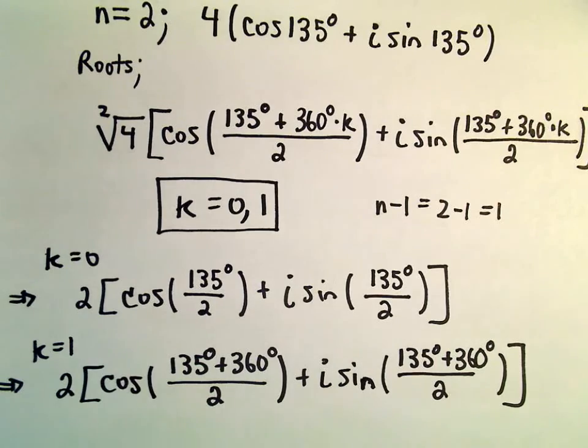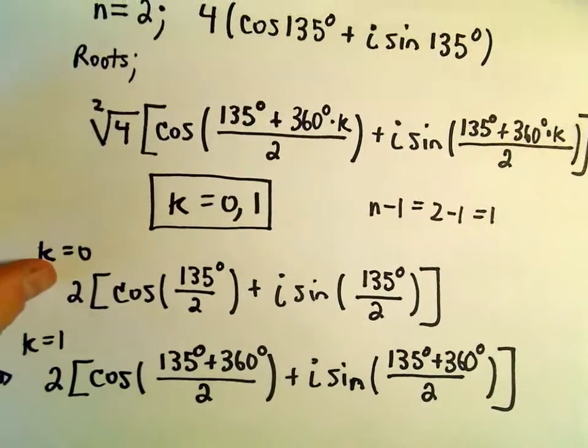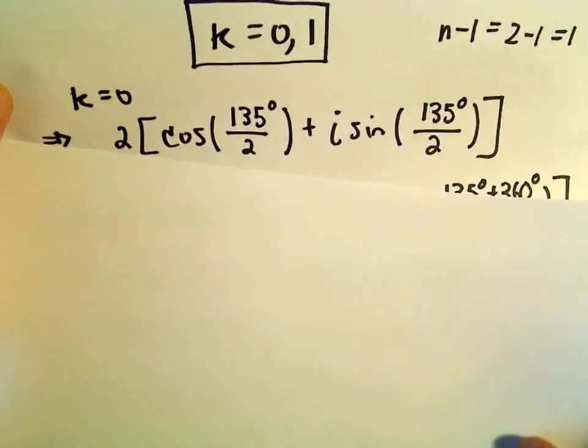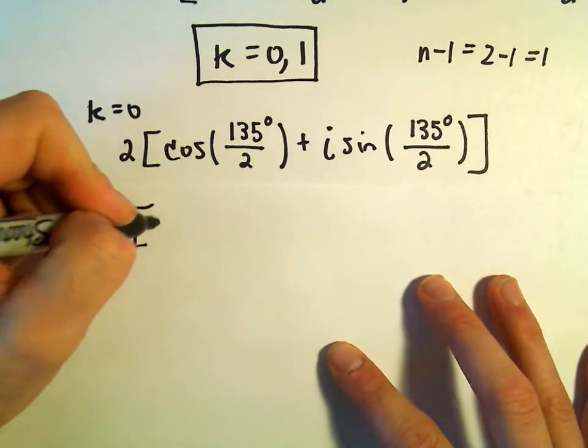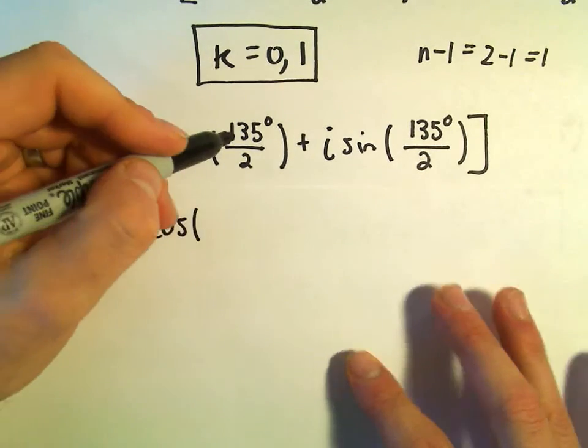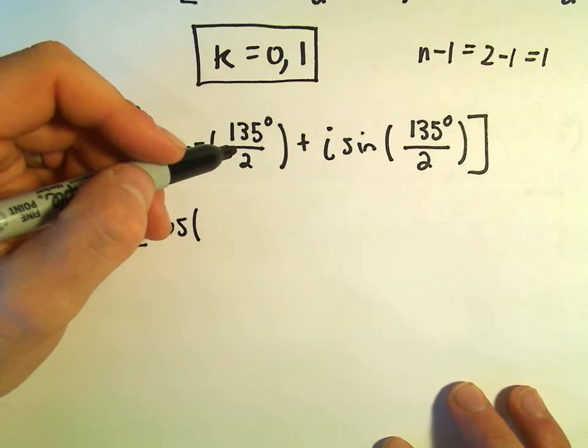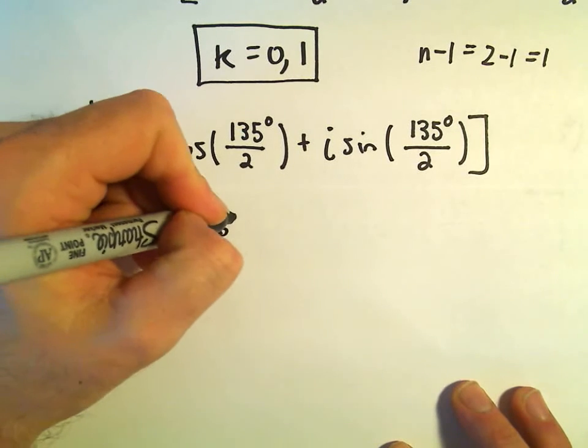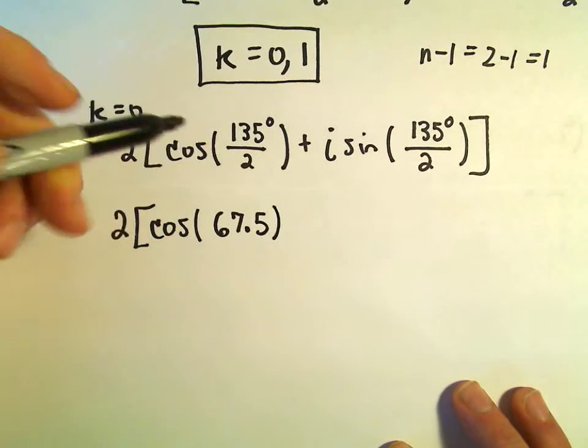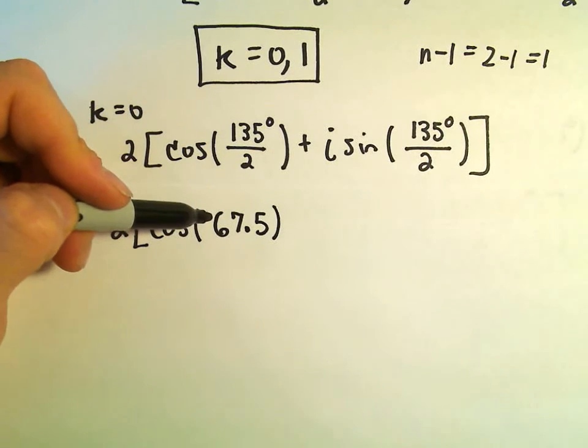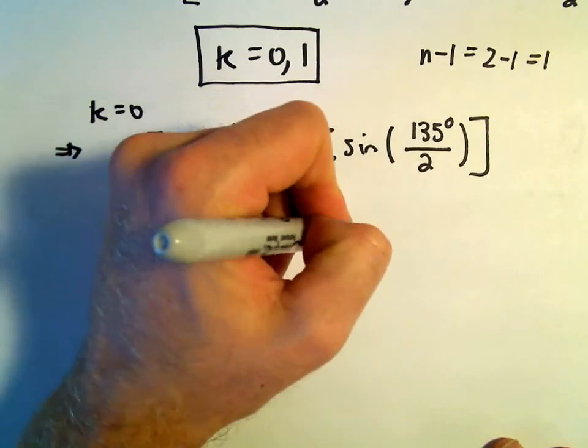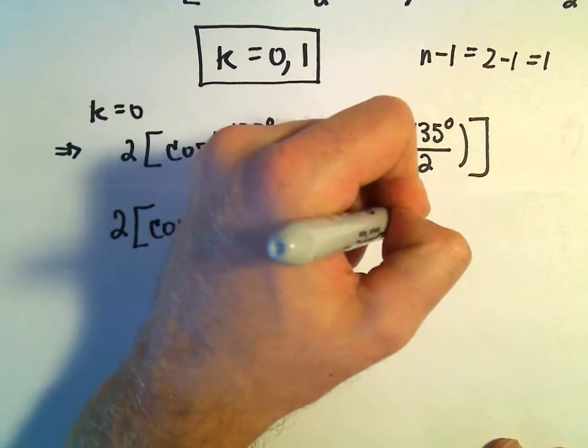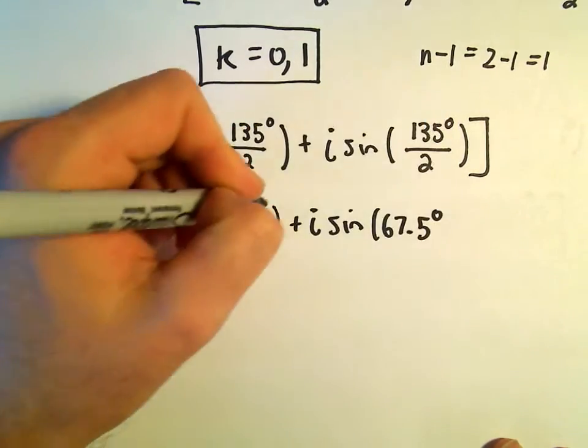So let's do that here. Let's see, so for our k equals 0, well, that's going to be 2 times cosine of, let's see, 135 divided by 2. How about 67.5? Is that 135 divided by 2? Looks good to me. Plus i sine of, well, 67.5. Again, these are in degrees.